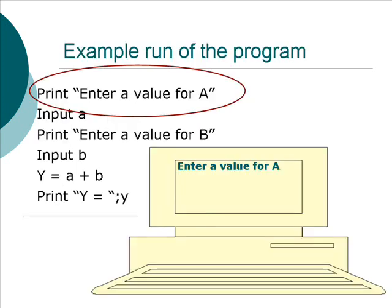So the first thing the computer does is it reads that first line, 'Print Enter a value for A,' and it interprets that as an instruction and executes it. We see on the computer screen below what it actually types on the screen. It just types the sentence 'Enter a value for A.' The thing that was inside the quotes, it just prints that to the screen.